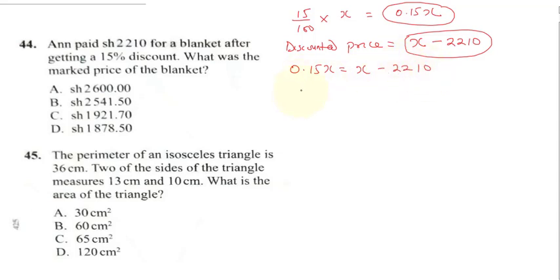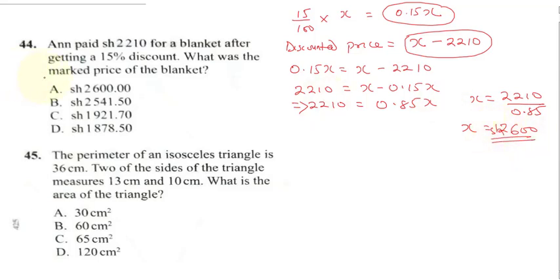From here we will collect like terms. 2210 is equal to x minus 0.15x, so this is going to give us 2210 equals 0.85x. Therefore x will be 2210 divided by 0.85, and when you do this division you are going to get 2600 shillings. So the correct answer here is A.